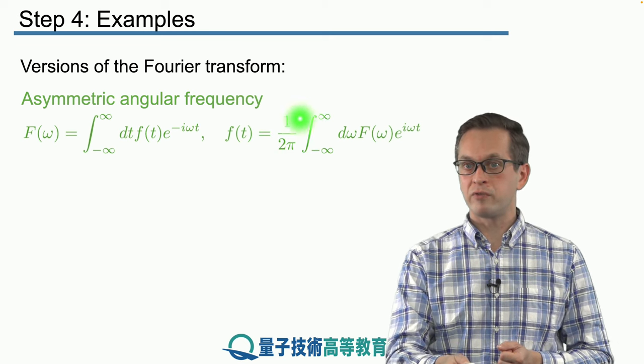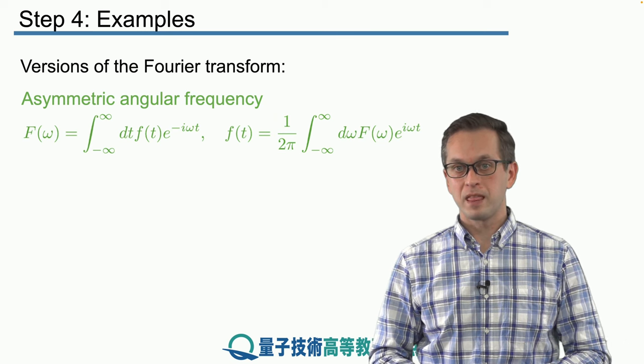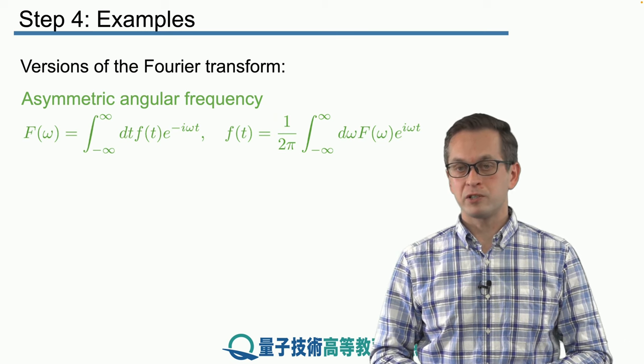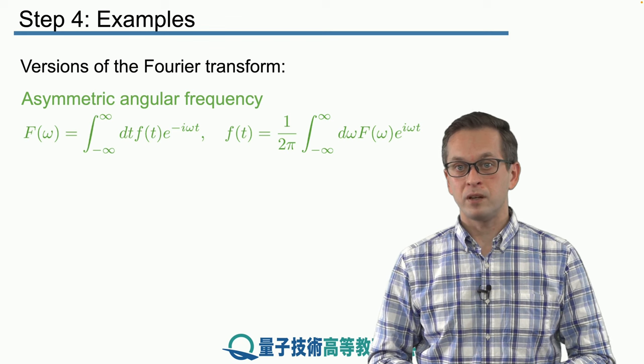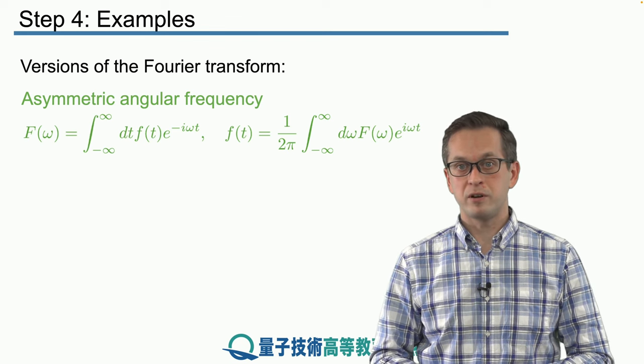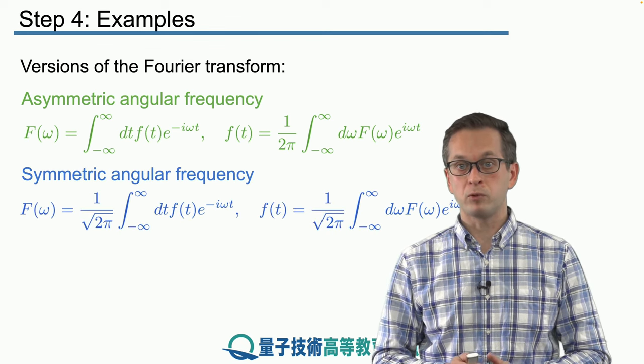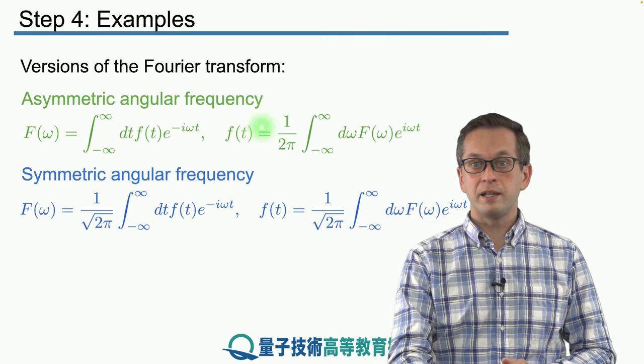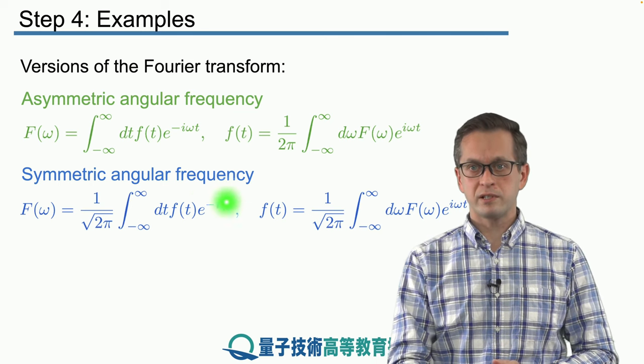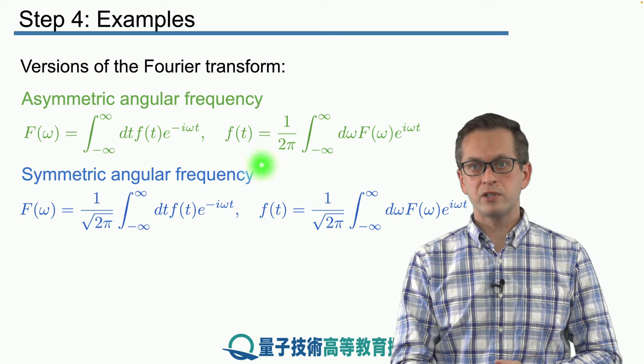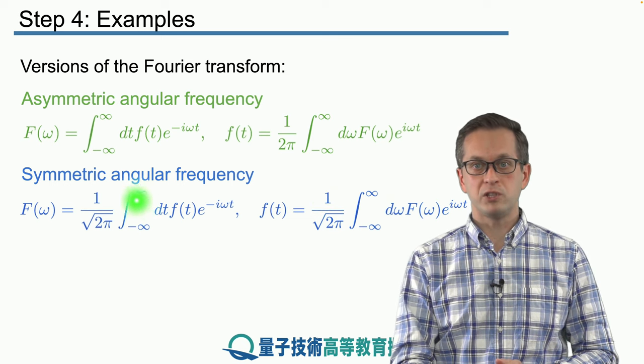the inverse Fourier transform is given by this following expression, where you have this coefficient of 1 over 2 pi. And as we have shown, this works. But there are many other notations that you can use. In particular, there is the symmetric version of what we have been using. And that has the following form. The integral is the same. Nothing really changes there.